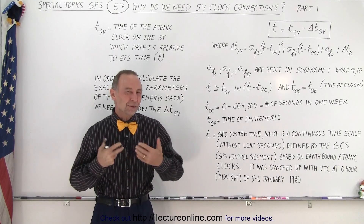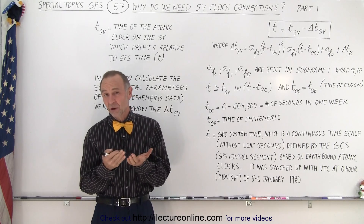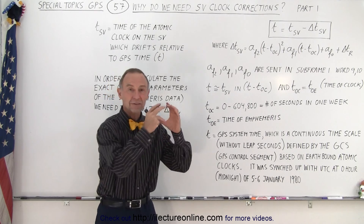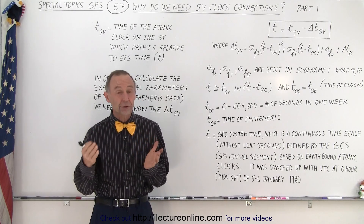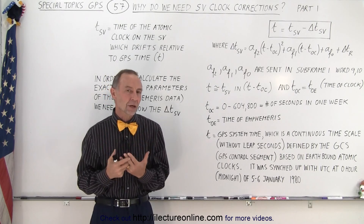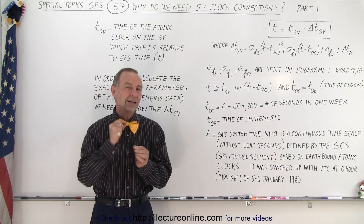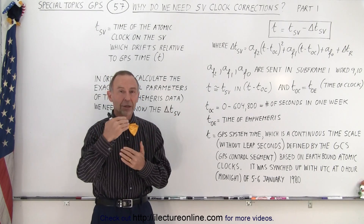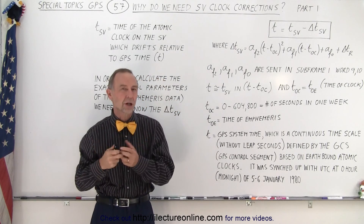Welcome to our lecture online. In the previous video we learned about clock corrections. We needed to make some corrections of the SV clock — the space vehicle clock — which is based on the atomic clock on the satellite itself. Those clocks tend to drift over time; they are atomic clocks but not as good as earth-bound atomic clocks. To know exactly where the satellite is and its orbital parameters, we need to pair up satellite time with actual GPS time — that's why we need those clock corrections.